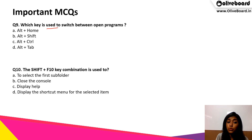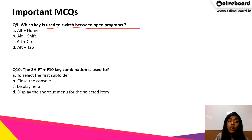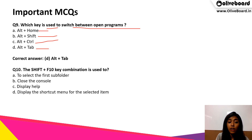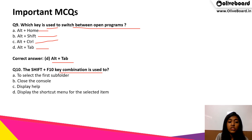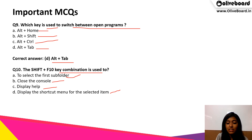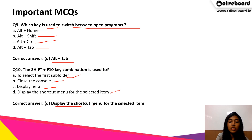Which key is used to switch between open programs? The options are Alt+Home, Alt+Shift, Alt+Control, or Alt+Tab. The correct answer is D — Alt+Tab. The Shift+F10 key combination is used to: A, select the first subfolder; B, close the console; C, display help; or D, display the shortcut menu for the selected item. The correct answer is D — to display the shortcut menu for the selected item.